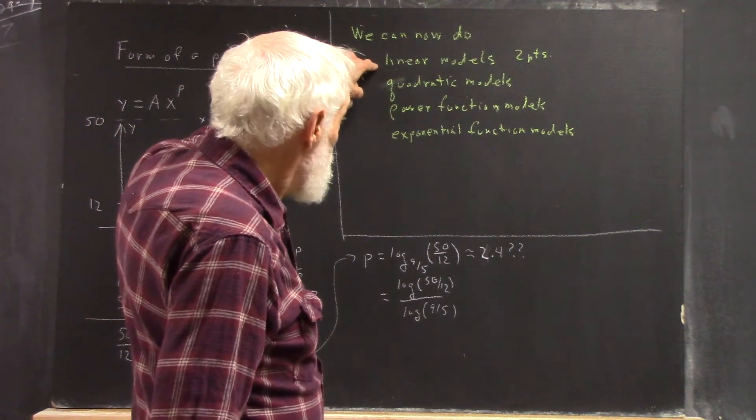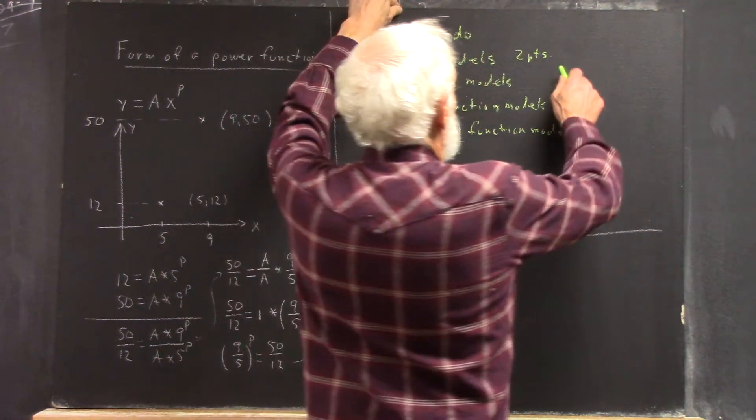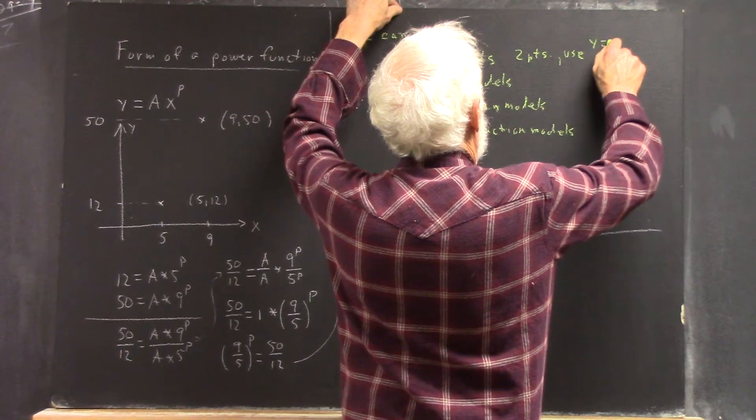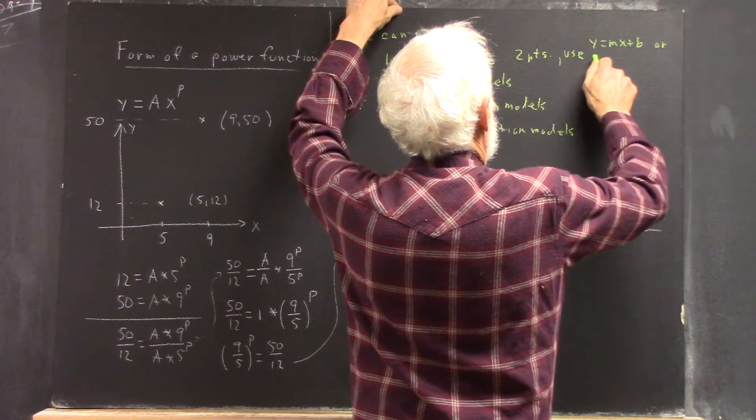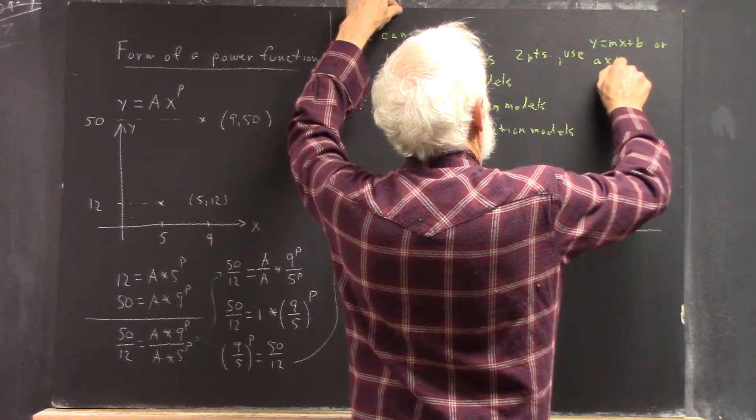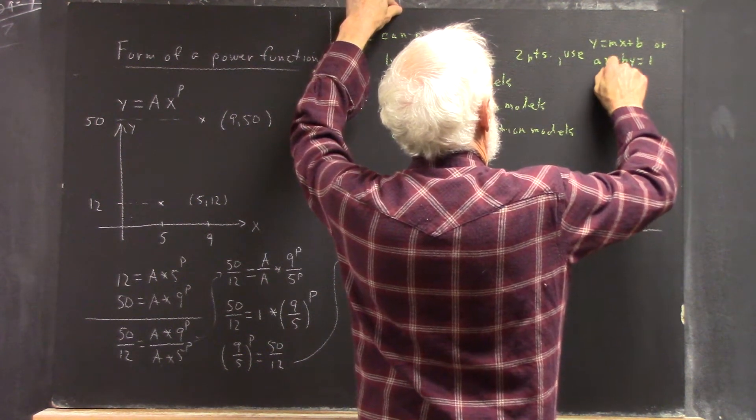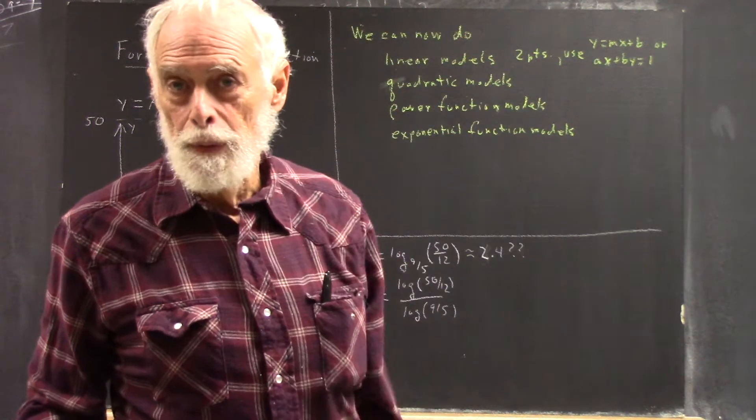Okay, for linear models, we need two points and use y equals mx plus b. Or ax plus by equals one, and we get simultaneous equations, right?